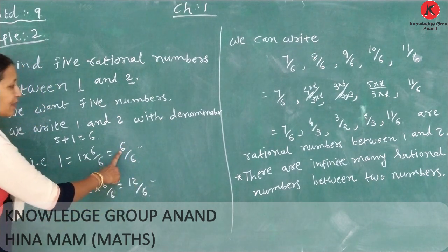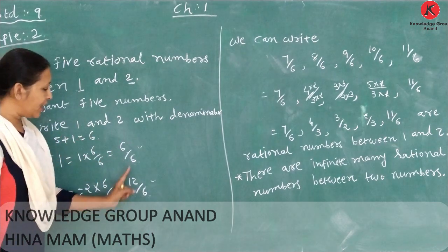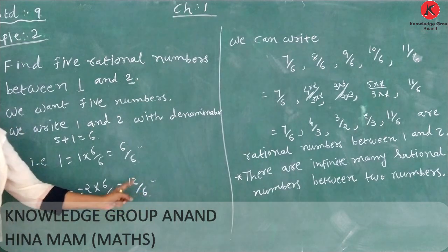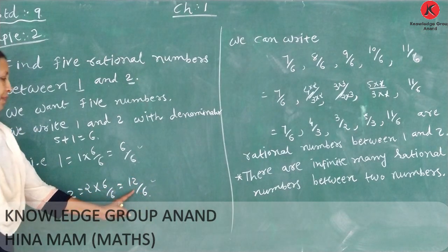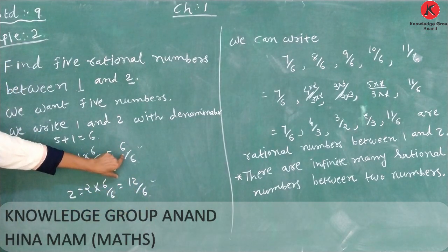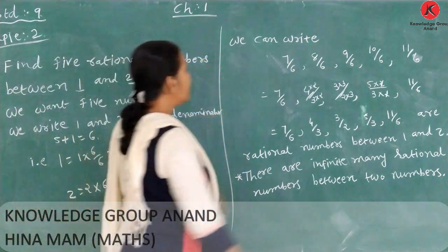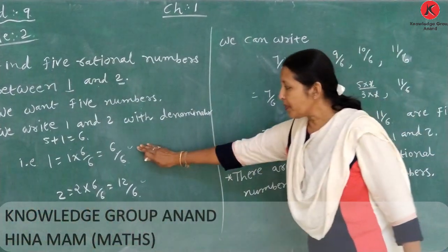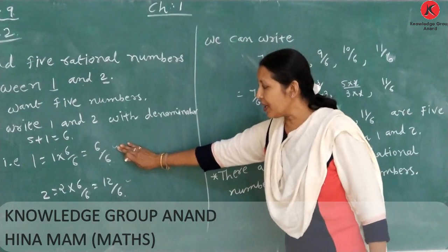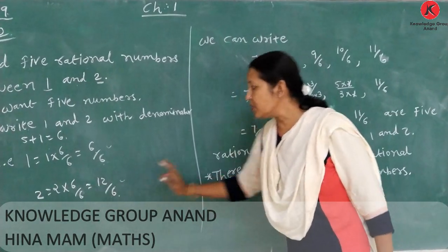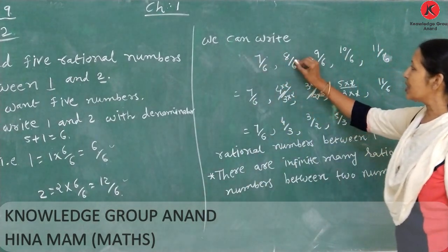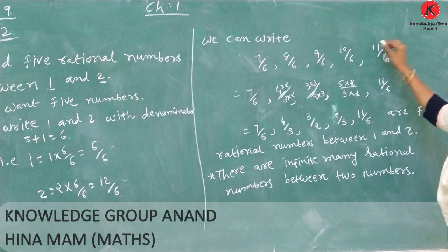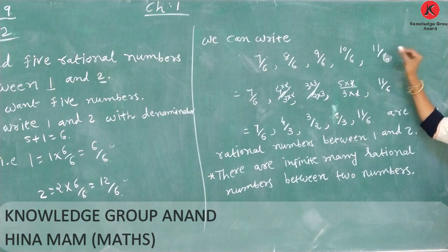Starting from 6 over 6: 7 over 6, 8 over 6, 9 over 6, 10 over 6, 11 over 6, and 12 over 6. So we can write the 5 rational numbers as: 7 over 6, 8 over 6, 9 over 6, 10 over 6, and 11 over 6.